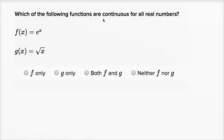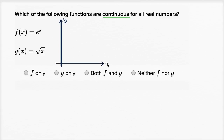Which of the following functions are continuous for all real numbers? Let's remind ourselves what it means to be continuous, what a continuous function looks like. A function is going to be continuous over some interval if it just doesn't have any jumps or discontinuities or gaps over that interval — if it's connected and defined over that interval without any gaps. So for example, a continuous function could look something like this.